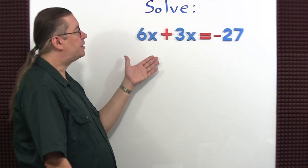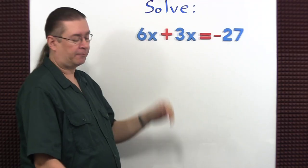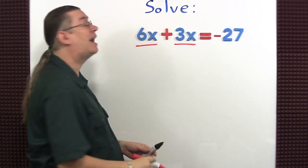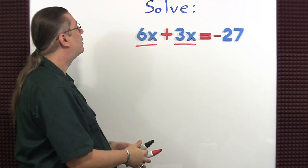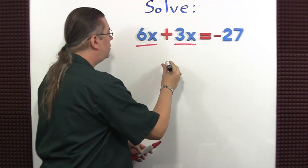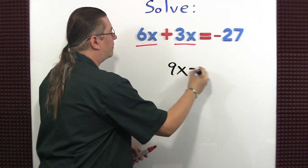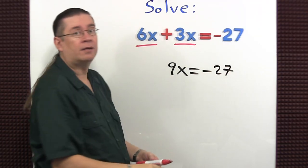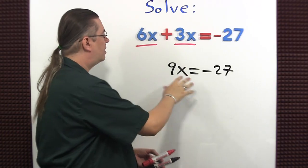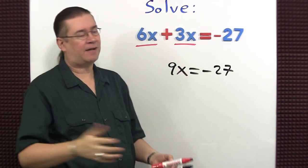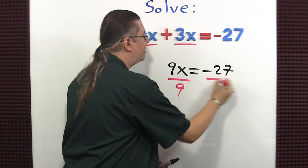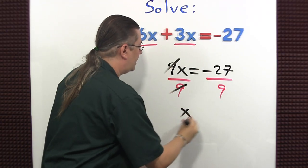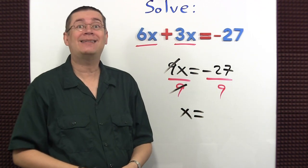Let's solve this two-step equation by combining like terms first. Let's identify them — there's a 6x and a 3x. To combine, just add up the coefficients and you get 9x; everything else stays the same. Now, x is being multiplied by 9, so we divide by 9, and what you do to one side you must do to the other side. The 9s cancel; x is going to equal negative 27 divided by 9, which is negative 3.